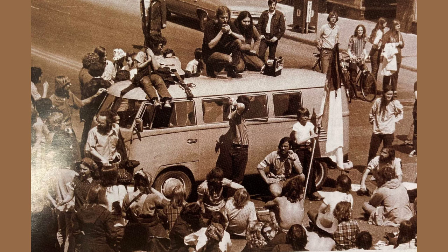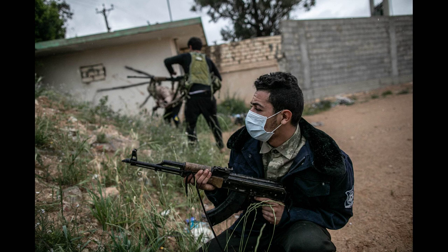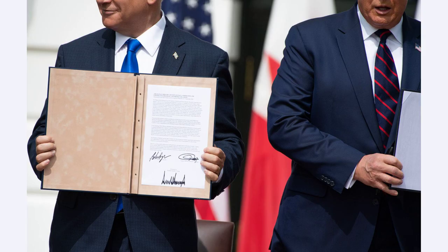In order to truly understand the Arab-Israeli conflict, we must first take a step back in time. This is a conflict that dates back decades, rooted in a complex web of historical, religious and political factors. It is a clash between two peoples — the Arabs and the Israelis — who both lay claim to the same land. The conflict has resulted in countless wars, uprisings and negotiations, leaving a trail of bloodshed and heartache in its wake. To comprehend the present situation, we must explore the past, examining the events and circumstances that have shaped this enduring struggle. So let's embark on a journey through history as we unravel the intricate tapestry of the Arab-Israeli conflict.